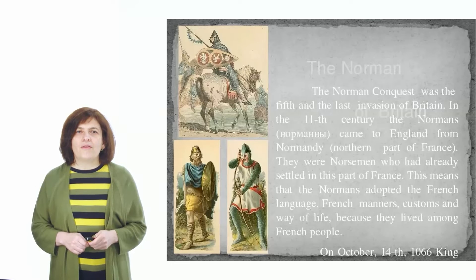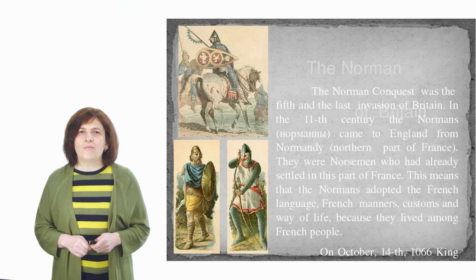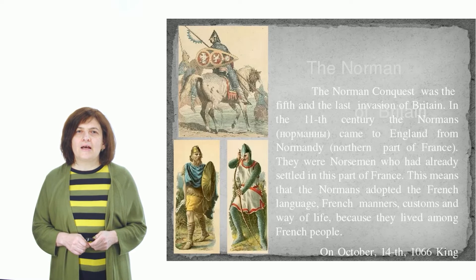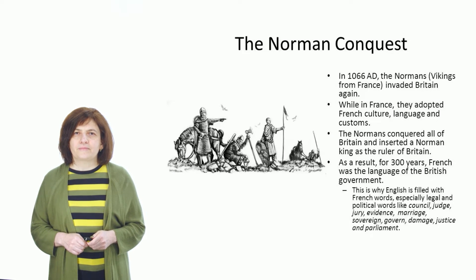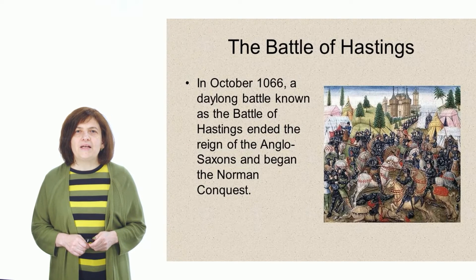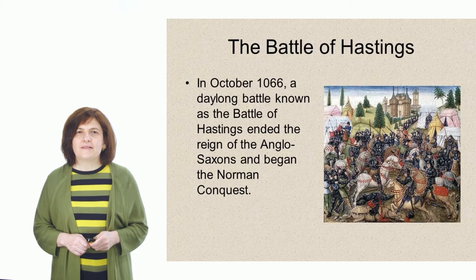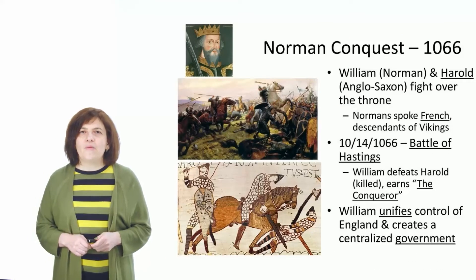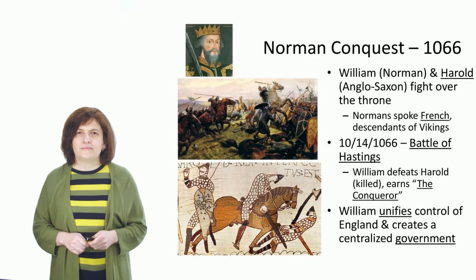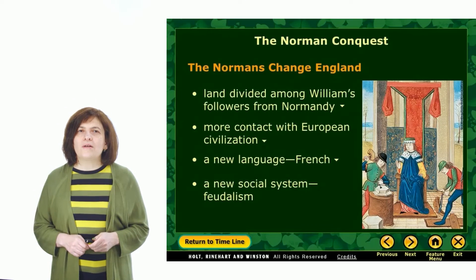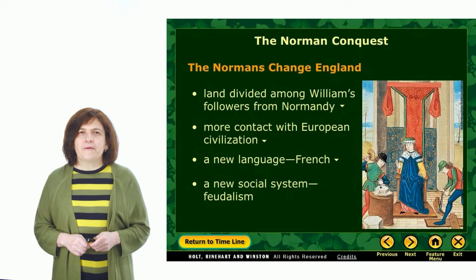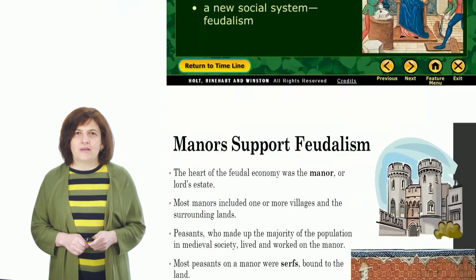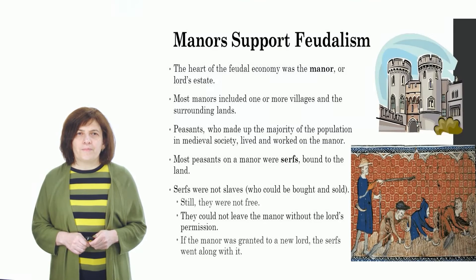The Northmen, or the Vikings, who had settled in north-western France, were called Normans. They had adopted the French civilization and language. They were good soldiers, administrators and lawyers. In 1066, at the Battle of Hastings, the Norman Duke William defeated the Saxon King Harold. Again, a new invasion took place. Within five years, William the Conqueror was complete master of the whole of England. He divided the land of the conquered people among his lords. With the Norman conquest, the feudal system was established in England.